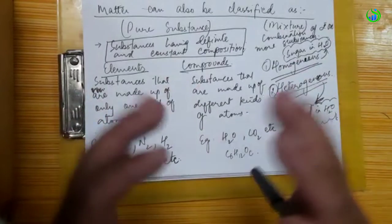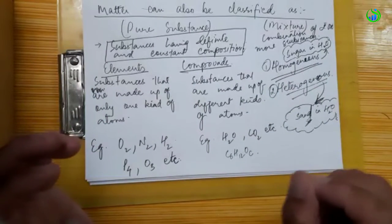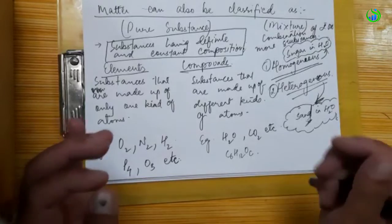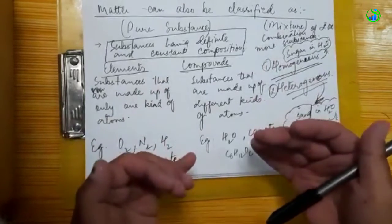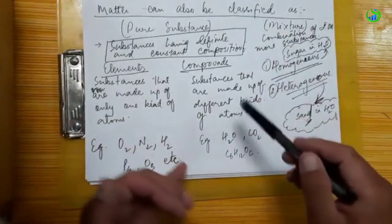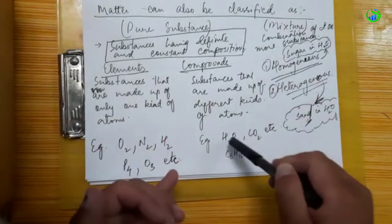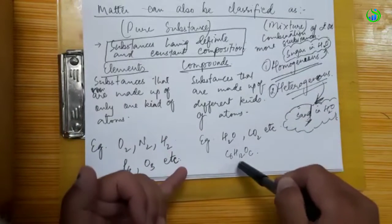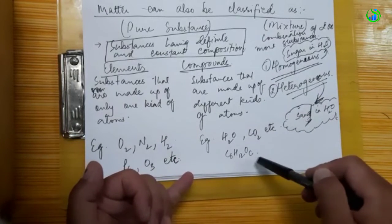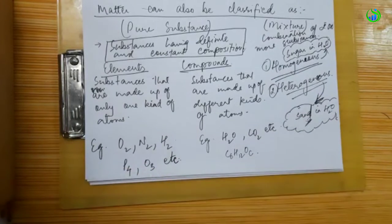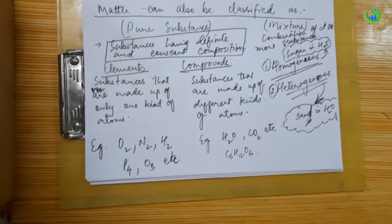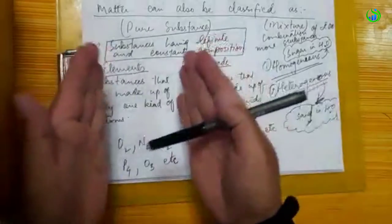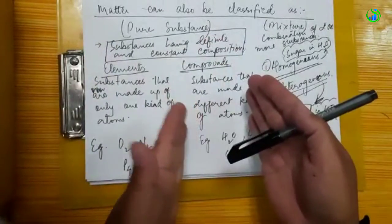Water is a compound — H2O. The atoms are different. For example: H2O, CO2, C6H12O6 which is glucose — these are compounds. So pure substances can be either elements or compounds.